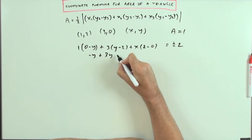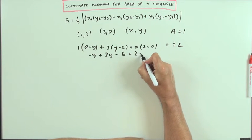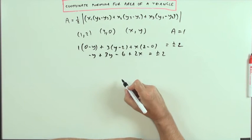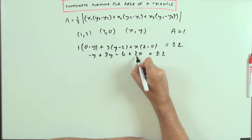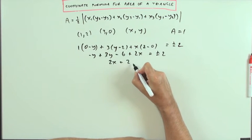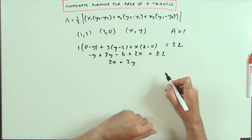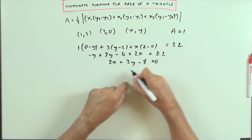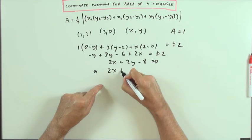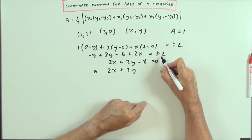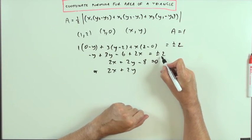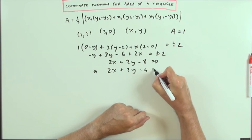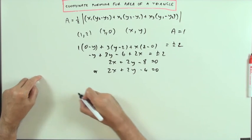So it's all together. Negative y. Plus 3y. Minus 6. 2x. Plus 2x. Equals plus or minus 2. Or if you like. Put them into order. 2x. Plus 2y. I'll bring it all over to this side. I'll take the plus one first. Minus 8. Equals 0. Or. 2x. Plus 2y. And if that was a negative 2 would come across. That's plus 2. Minus 4. Equals 0.